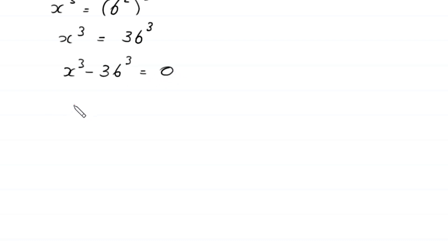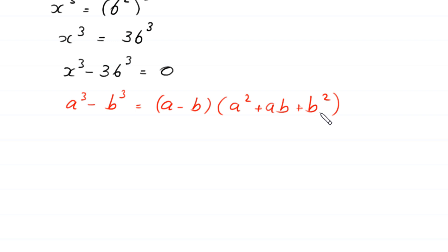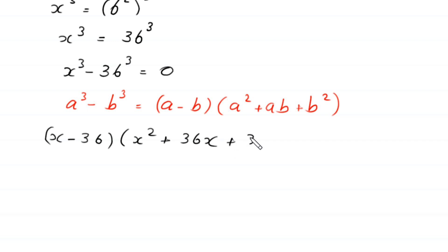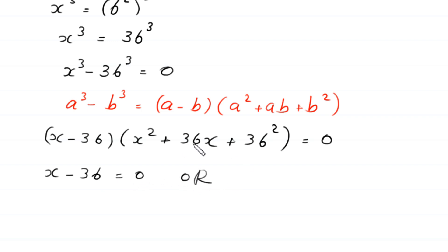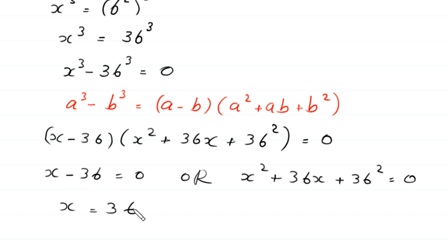By using the algebraic identity — a cubed minus b cubed equals (a minus b) times (a squared plus ab plus b squared) — this expression becomes (x minus 36) times (x squared plus 36x plus 36 squared) equals 0. From here, either x minus 36 equals 0, giving us x equals 36 as the first solution, or we solve the quadratic expression x squared plus 36x plus 36 squared equals 0.